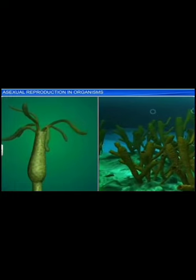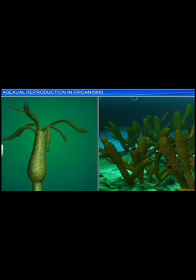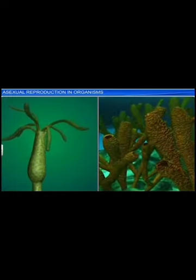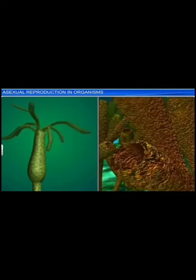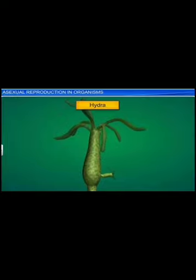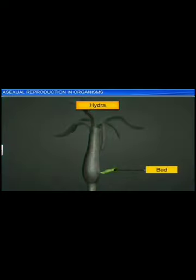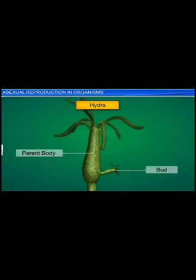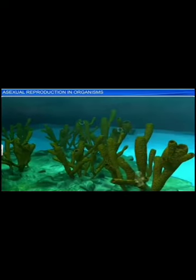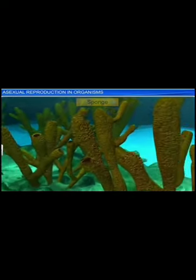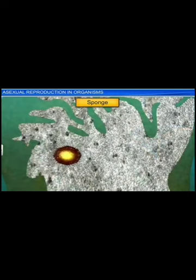Apart from fungi, we also see asexual reproductive structures in certain members of kingdom animalia. In the case of hydra, buds which develop on the parent body serve as a means of reproduction. Likewise, the sponge produces internal buds called gemmules that aid in asexual reproduction.